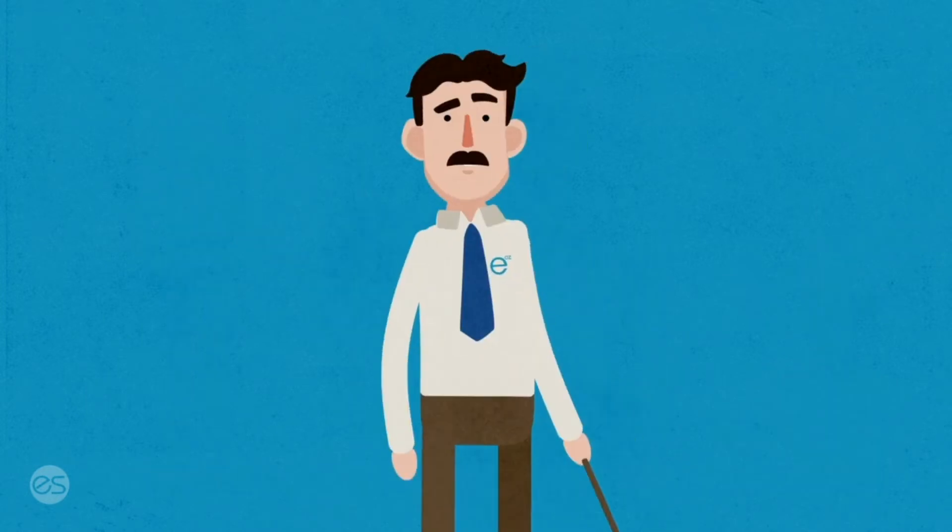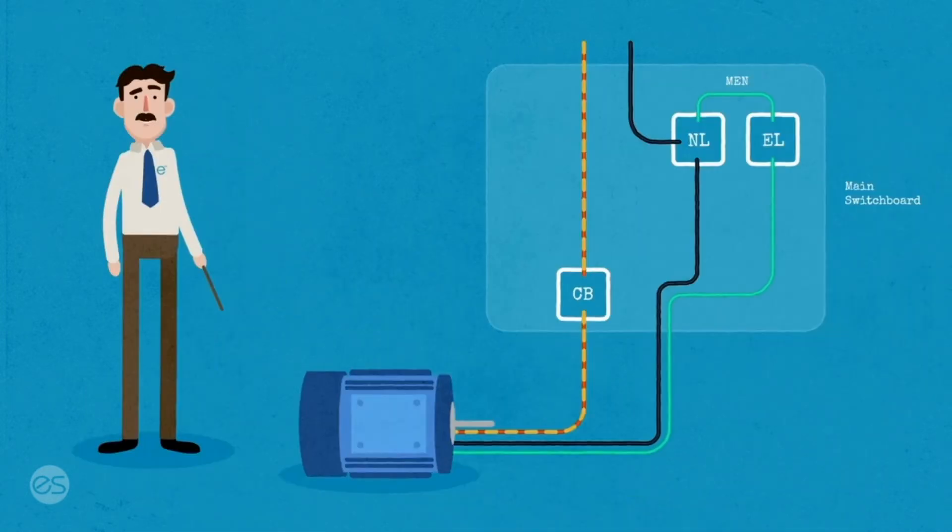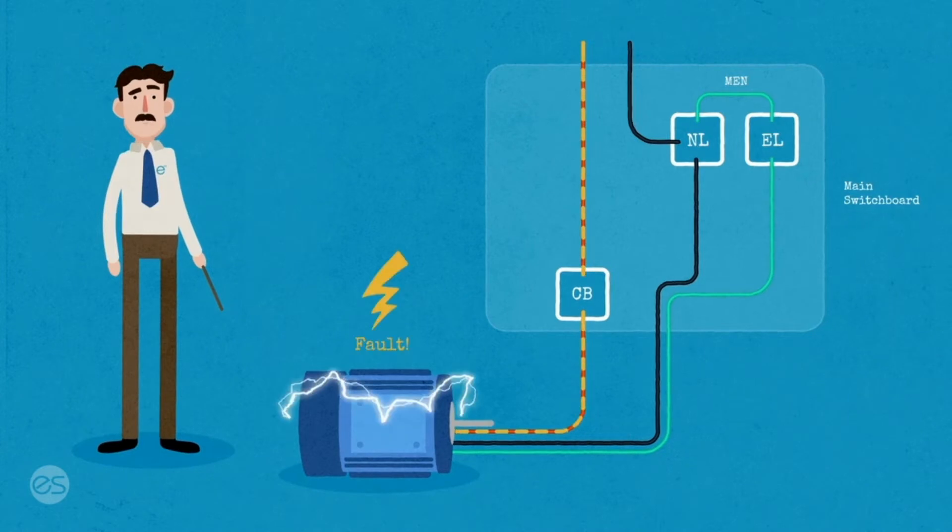Here we have an electric motor connected to the main switchboard. And it has a fault. If I touch the metal frame of the motor, I could get an electric shock or worse, be electrocuted. This is called touch voltage.